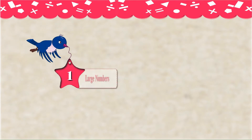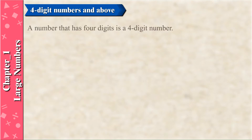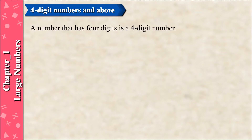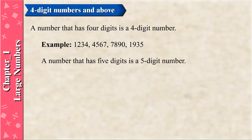Chapter 1: Large Numbers — Four-digit Numbers and Above. A number that has four digits is a four-digit number. Examples: 1,234; 4,567; 7,890; 1,935. A number that has five digits is a five-digit number.